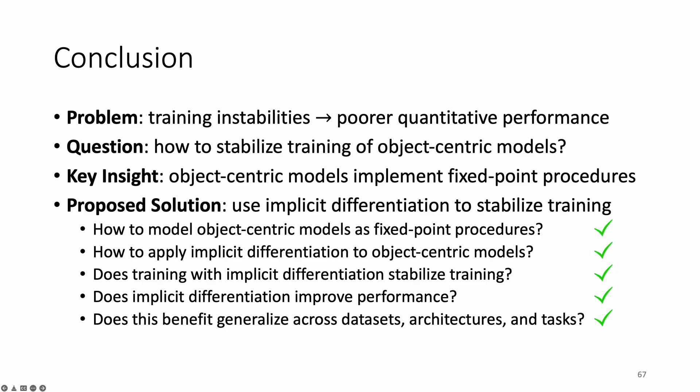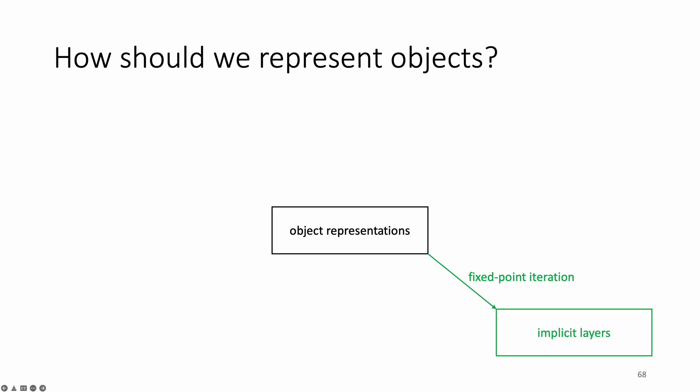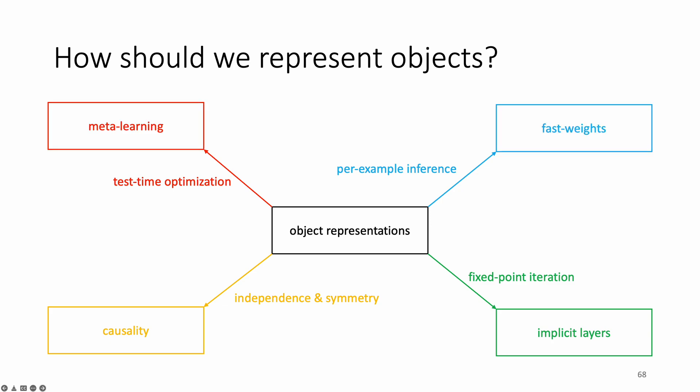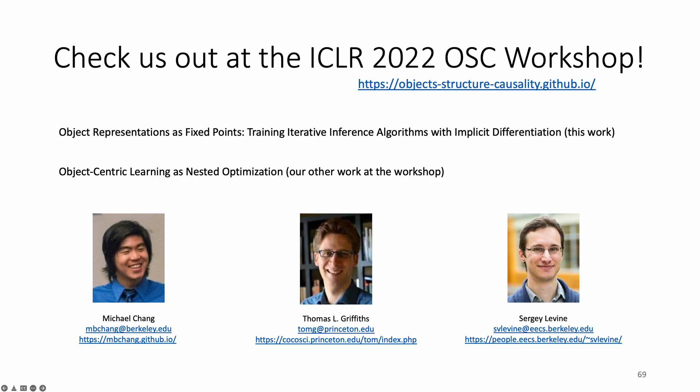In conclusion, in this talk, I argued that it is useful to conceptualize object representations as stable points of a fixed-point procedure. And I defended my argument by showing the benefits of training slot attention with implicit differentiation. The connection we made during this talk between object-centric models and deep equilibrium models also revealed various other properties about object representations that have connections to other areas of machine learning. So perhaps instead of thinking about object representations as static pieces of data, like bounding boxes or vectors of attributes, as we usually do, we might want to consider thinking about them as adaptive states of a dynamic process. That's it for this talk. Thanks to both my advisors, Tom Griffiths and Sergey Levine, for a fun project. Come check out our work at the ICLR 2022 Workshop on Objects, Structure, and Causality.